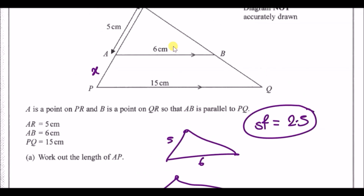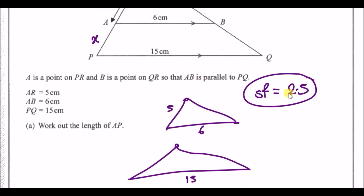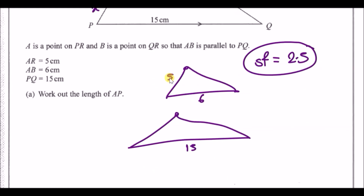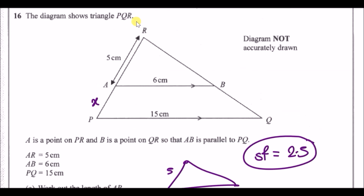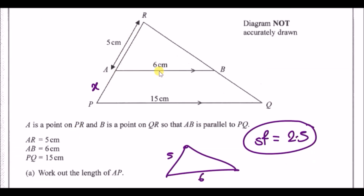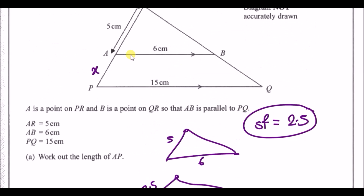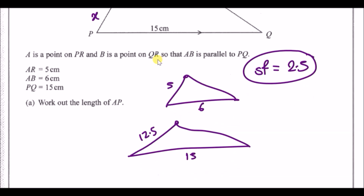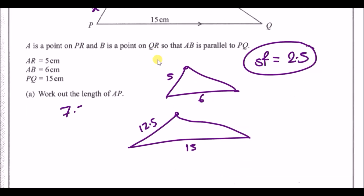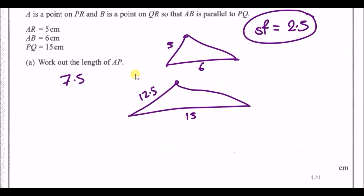All lengths are multiplied by 2.5, so the full length from R to P is 5 × 2.5 = 12.5. We already know part of it is 5, so subtract to find AP: 12.5 − 5 = 7.5. The length of AP is 7.5.